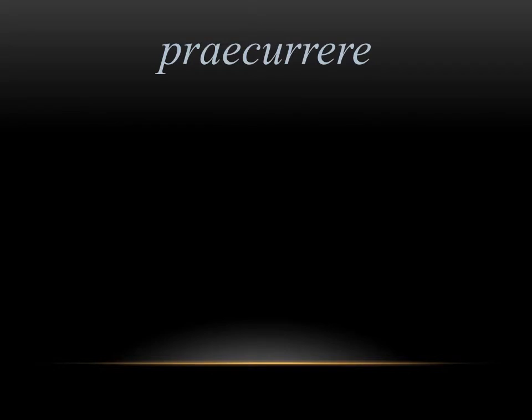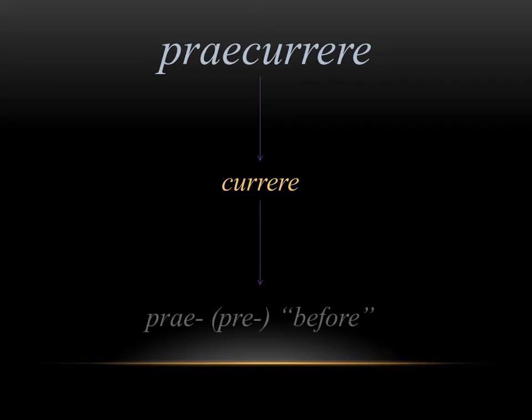The first word we want to look at is praecurrere, which in Latin means to run before. This word we've actually seen in a different form in the verb currere, which means to run. This should make some sense because it has the prefix prae, which means before, so if you put it all together it literally means to run before, which is exactly how we define it in Latin.